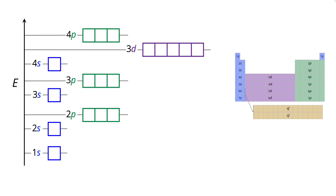We use a box to represent each orbital and then we use half arrows to represent each electron. A half arrow pointing up corresponds to an electron with plus one half spin or up spin, and a half arrow pointing down corresponds to an electron with down spin or negative one half spin. So let's see how this works.